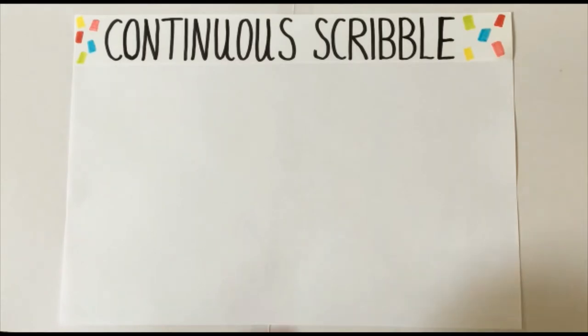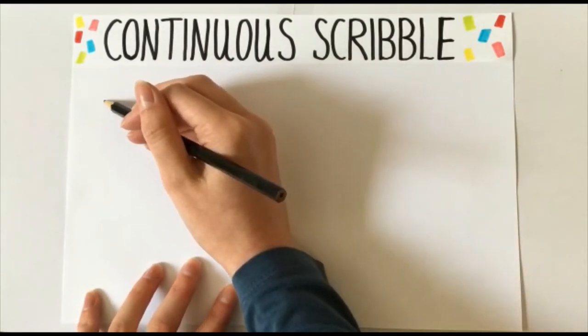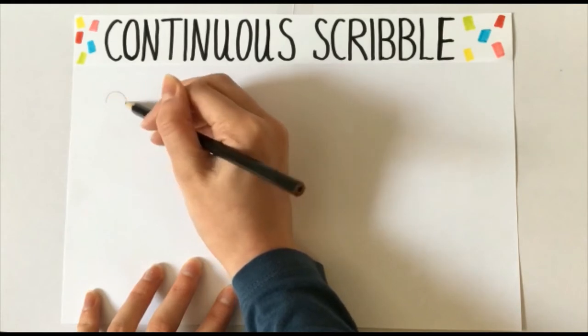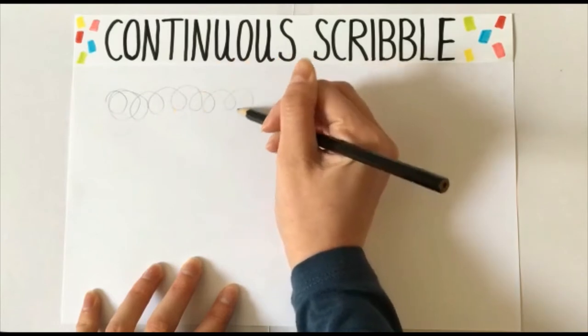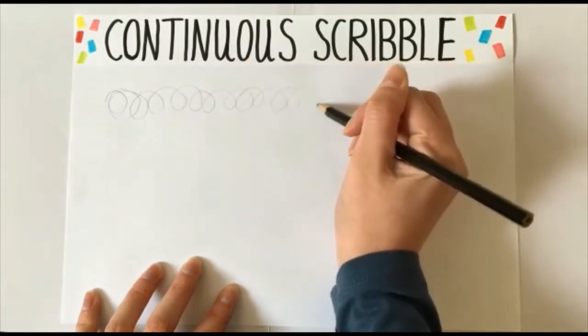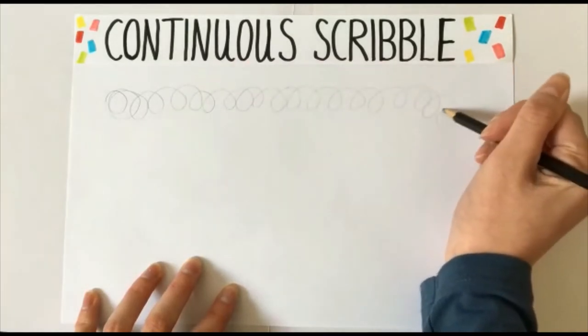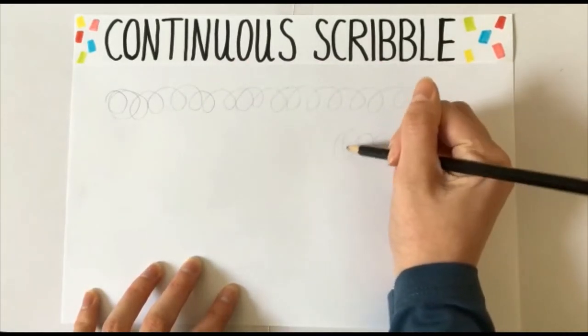What you need to do is pick a starting point on your paper and draw circular scribbles all around trying to fill all of the space. Don't take your pen or pencil off. Really think about the feel and the flow of your pencil.